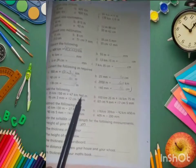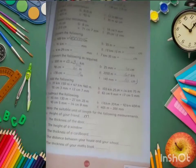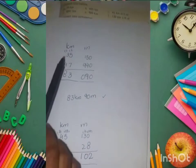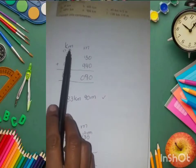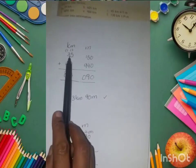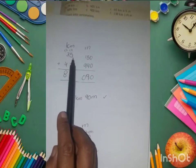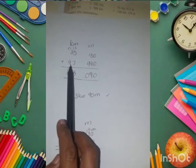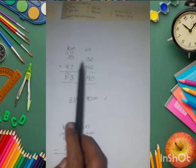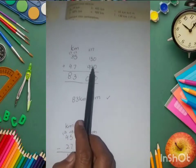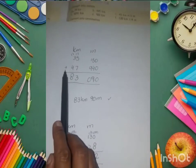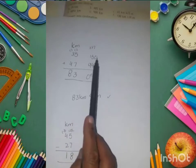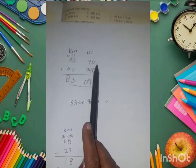First, we arrange the columns: kilometers and meters. The question is 35 kilometers 150 meters plus 47 kilometers 940 meters. This is addition.